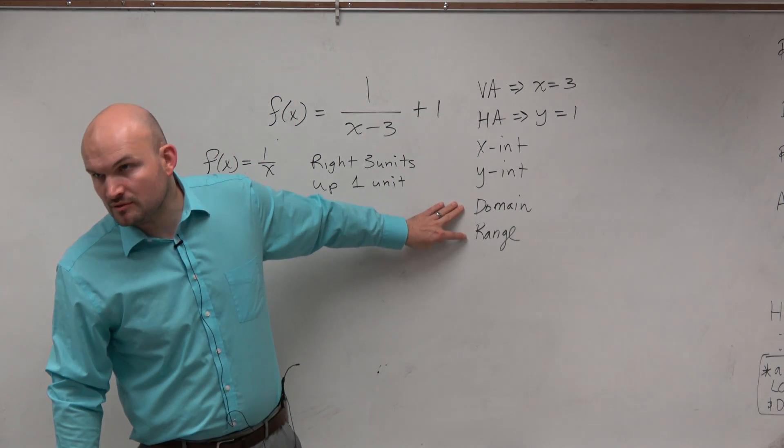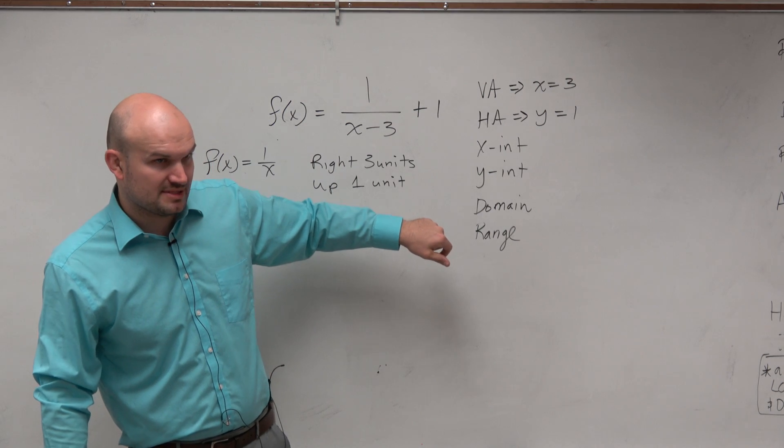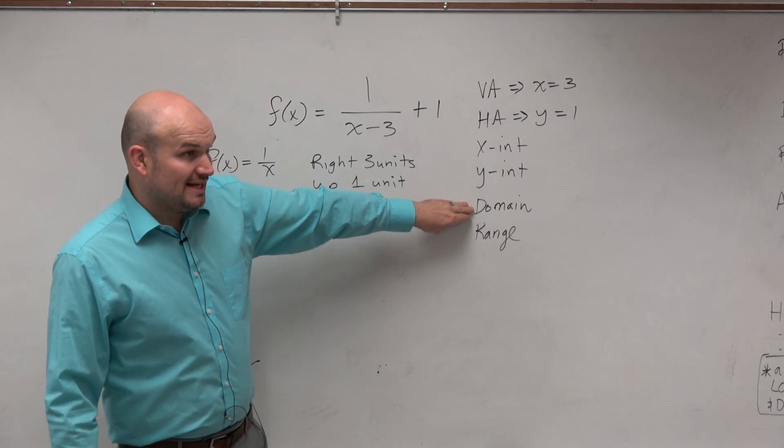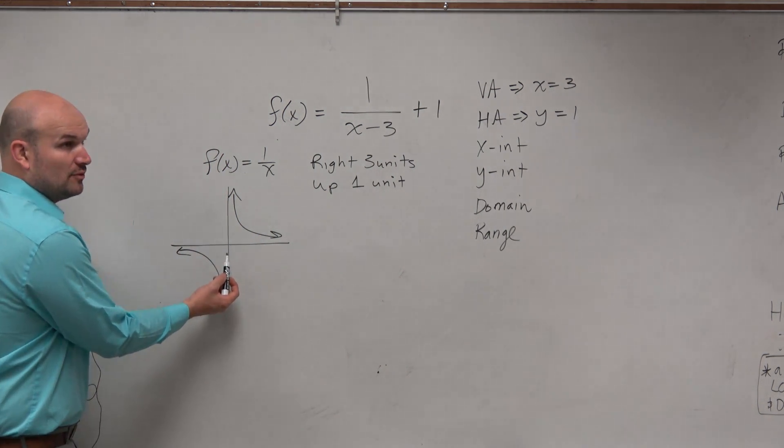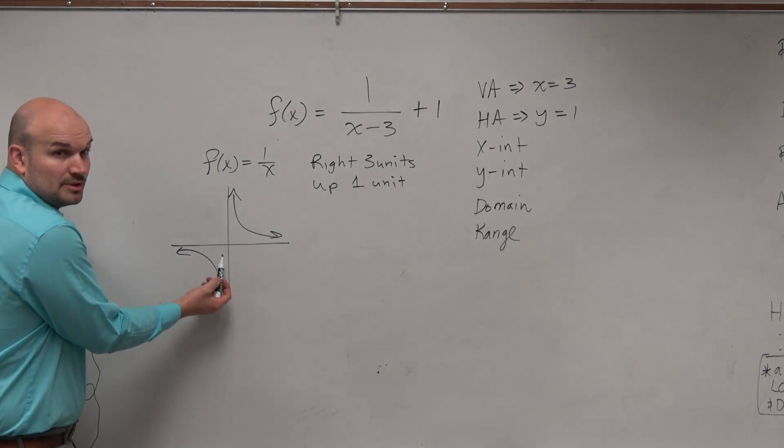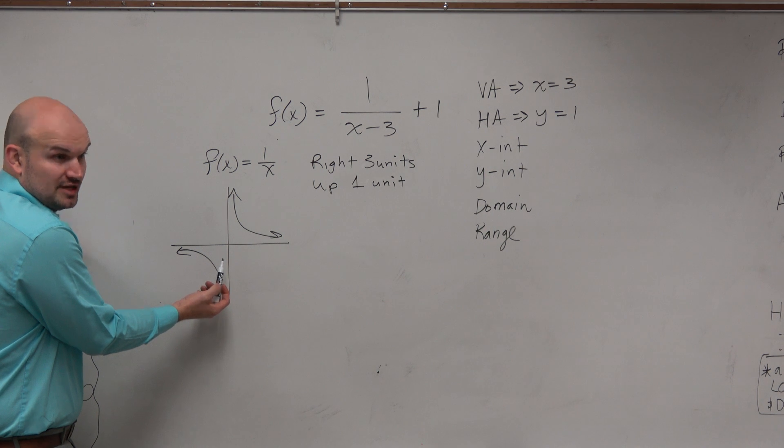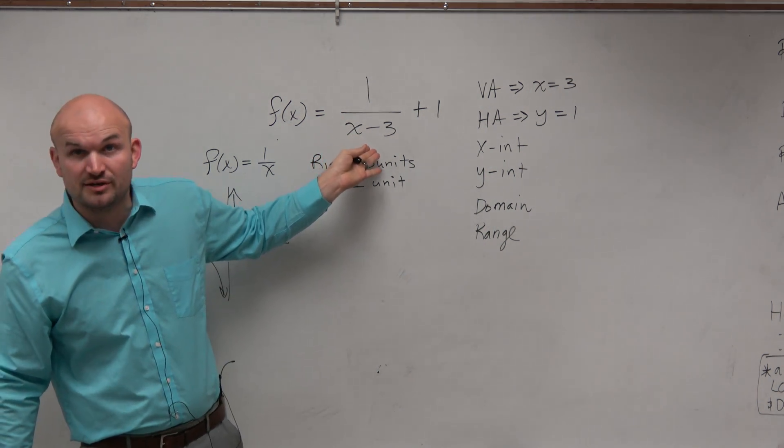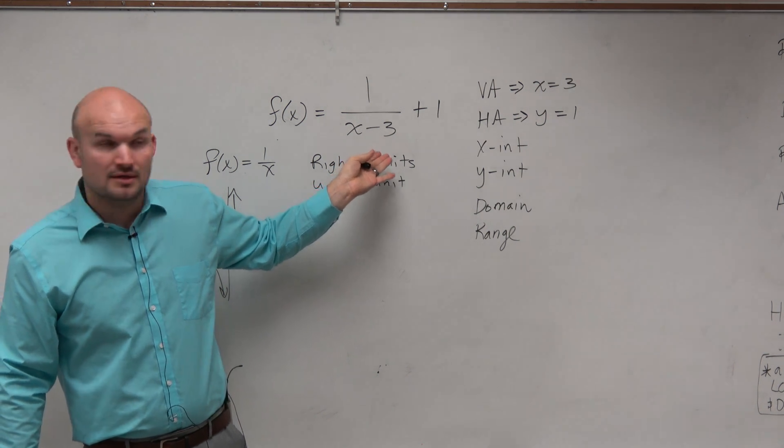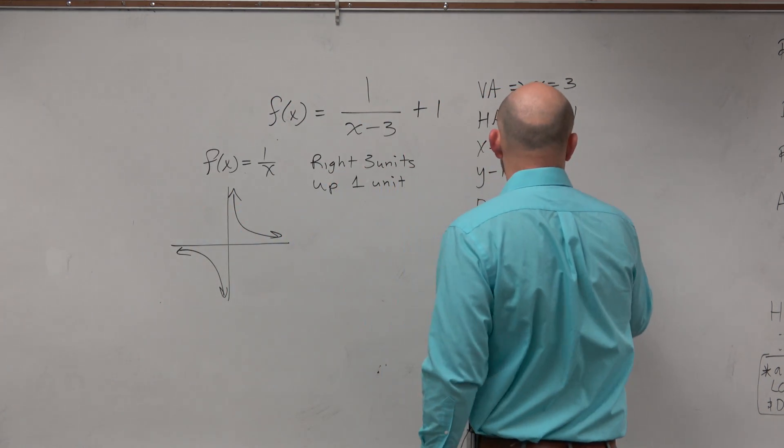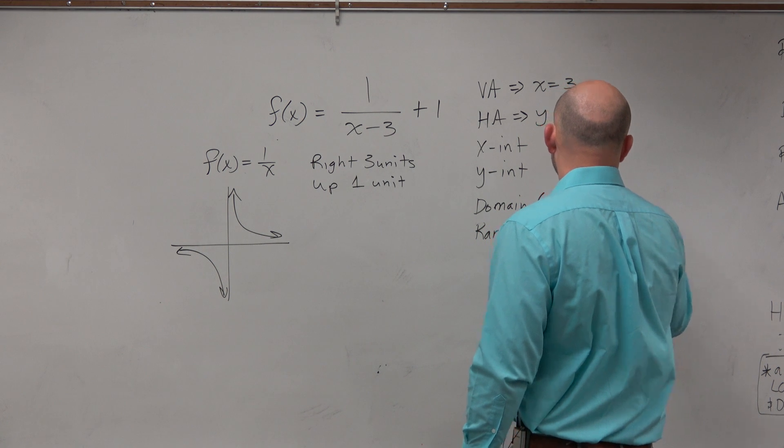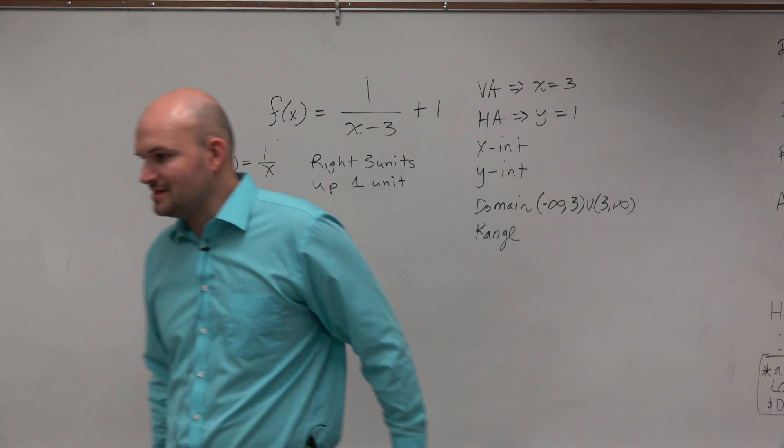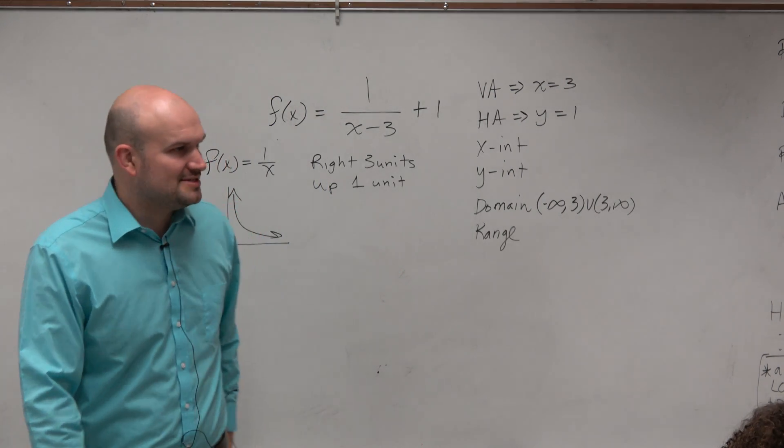Let's go ahead and go to domain and range here first, and then I'll get to the x and y-intercepts, because that's something new we haven't really talked about in a while. The domain is all real numbers except for where the asymptote occurs. That's the undefined value. Would you guys agree that 3 is undefined in this function? If I plug in a 3, then I'm going to have 0 in the denominator. So by using interval notation, I can write this as negative infinity to 3 union 3 to infinity. Thankfully, we did all that practice last class period. That's a little bit easier than what we did.